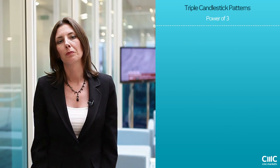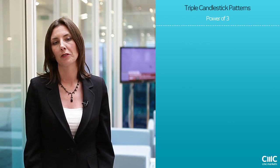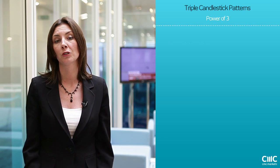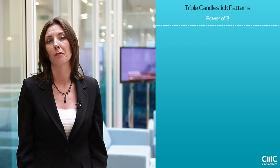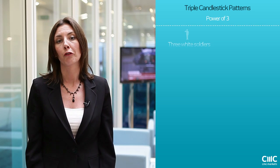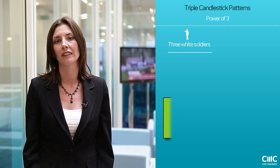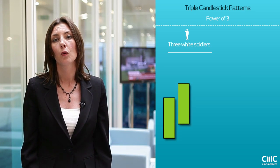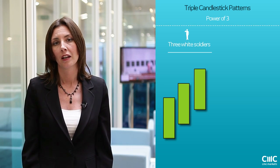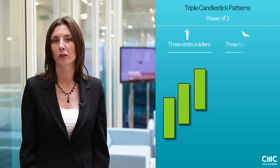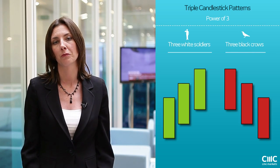In pre-modern Japan, the number three had very mystical properties. As a result, you'll find a lot of patterns are based on the number three. For example, three white soldiers — three long candlestick patterns one after the other — is quite a bullish move. Then you've got your three black crows, which conversely will be seen as a very bearish move.